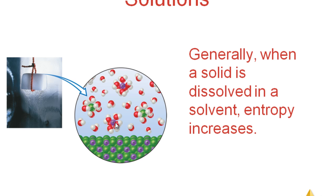However, for some ionic solids with very high charges, the entropy change can be negative. As the charge of the ion increases, the attraction between the ion and the water molecules increases. With sufficiently high-charged ions, they can lock all those water molecules into a rigid position around them. So cations and anions with very high charges can actually produce a net decrease in entropy upon dissolving.